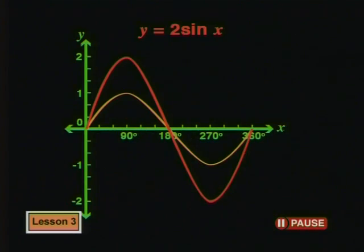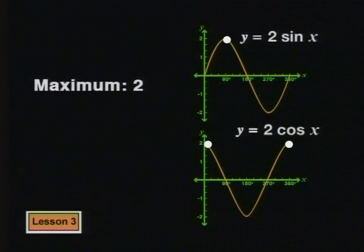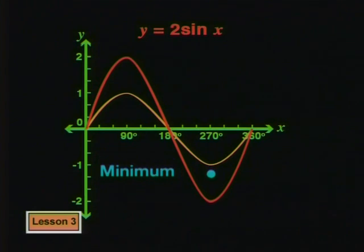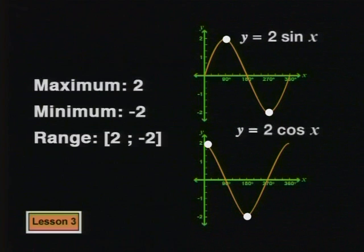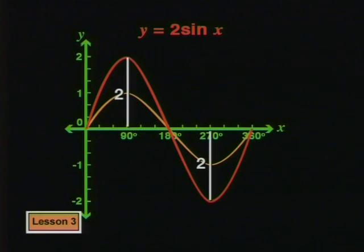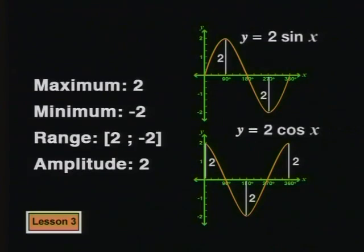Now, let's compare the two parent graphs with the new graphs we've plotted. What do you notice about the maximum and minimum values of the new graphs? The maximum value has changed from 1 to 2 on this graph, and on this graph, the maximum has also changed from 1 to 2. So, the maximum on both graphs has been changed from 1 to 2. The minimum value has changed from negative 1 to negative 2. So, the range of both graphs is from negative 2 to positive 2. The amplitude of the graph is the maximum distance away from the x-axis, so both graphs have an amplitude of 2.